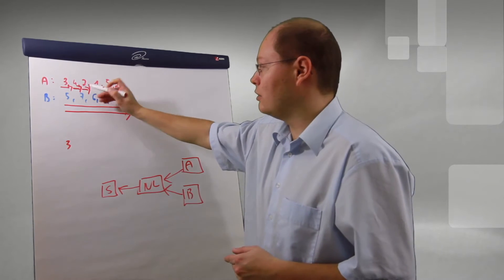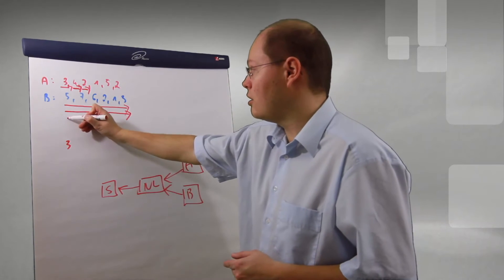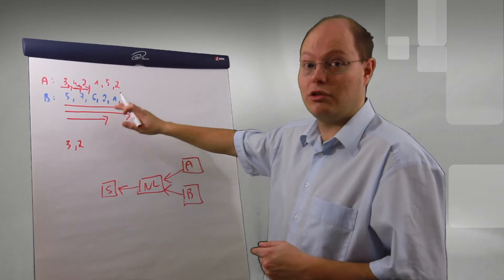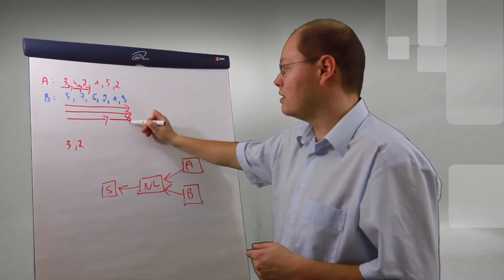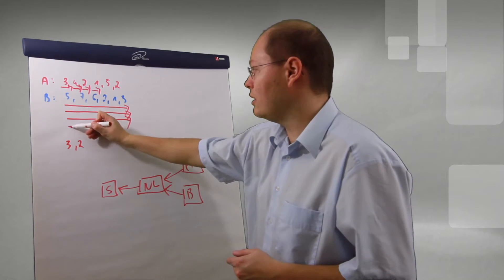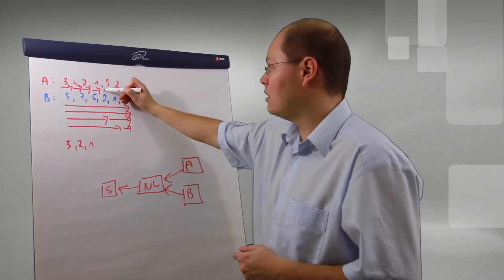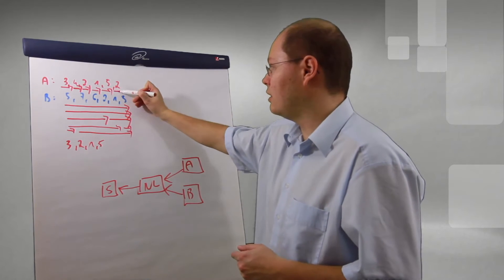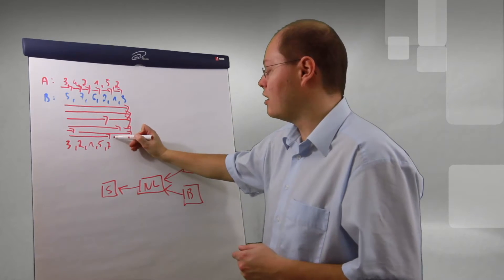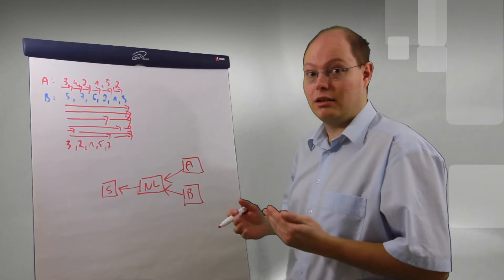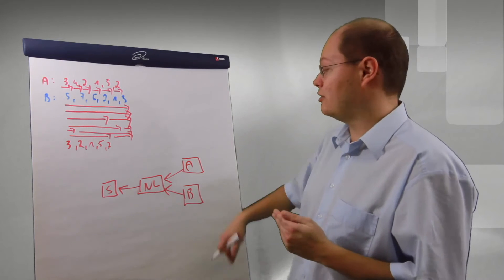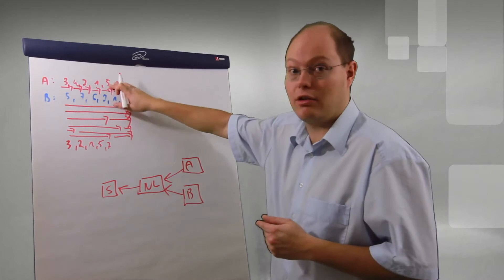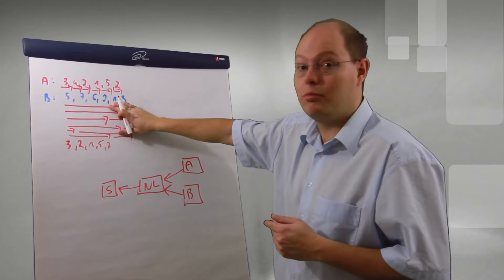We move forward on the outer loop to record value 2, go through the inner table, and find a matching record. Because of the unsorted input, we have to scan till the end. The same with the value of 1 — one matching record. Value of 5 — one matching record. And finally, value of 2 — also one matching record. As you can see, nested loop doesn't scale very well, because for every record on the outer table, you have to do one full loop on the inner table.